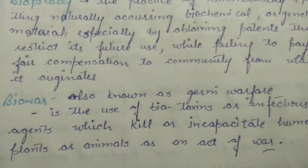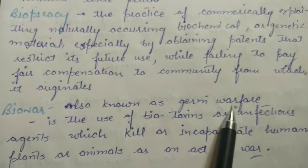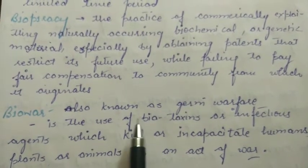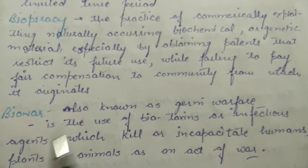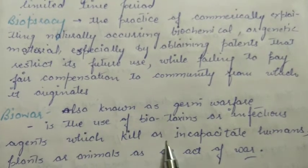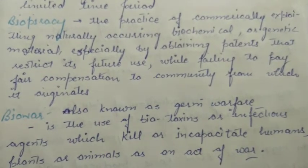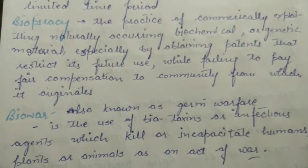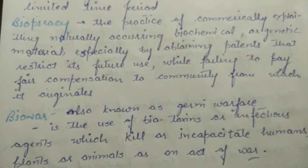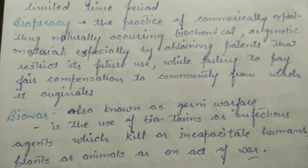The last term is bio war, also known as germ warfare. Bio means living, so bio war means using living agents in warfare. It is the use of biotoxins or infective agents like bacteria, virus, fungus, protozoa, or any kind of pathogen, which are used against human beings, plants, or animals to threaten life. This is the final chapter. If there are any doubts, anyone can ask. Thank you, good morning.